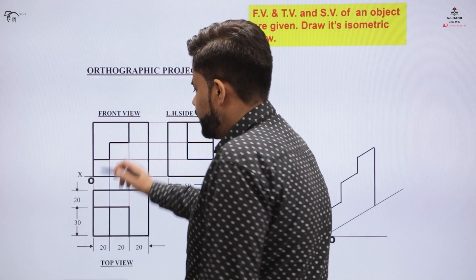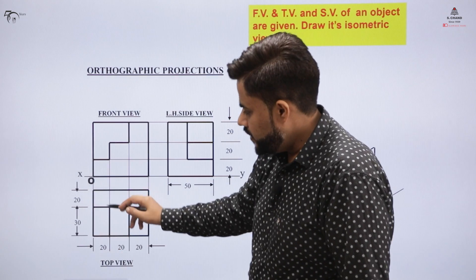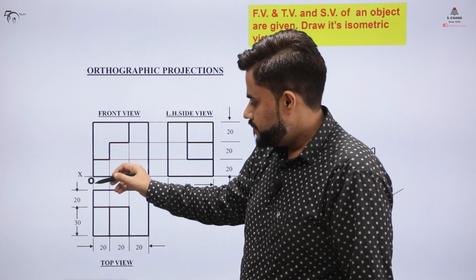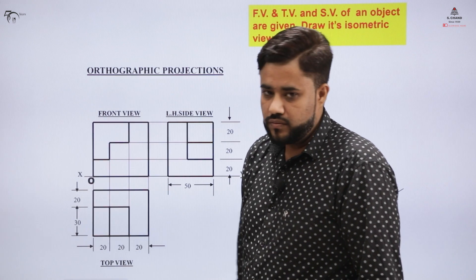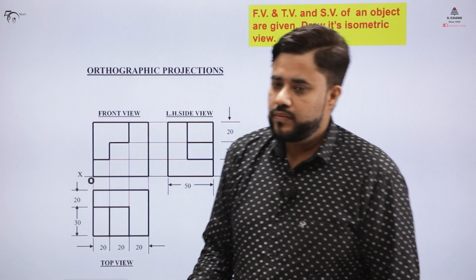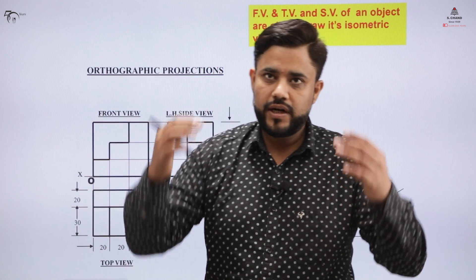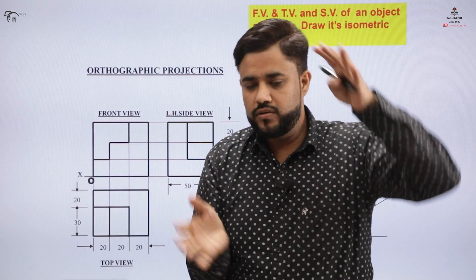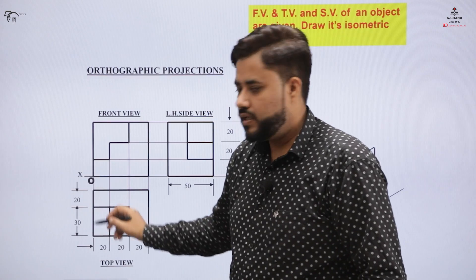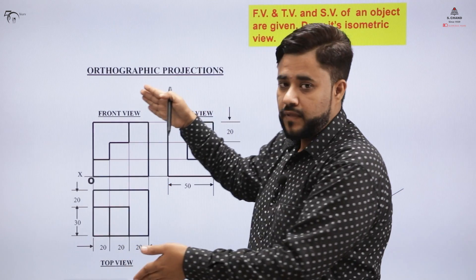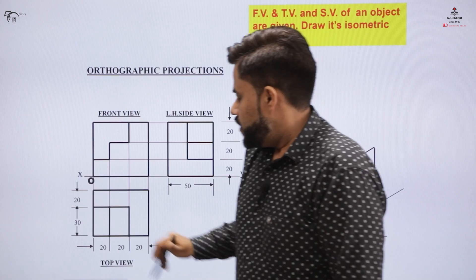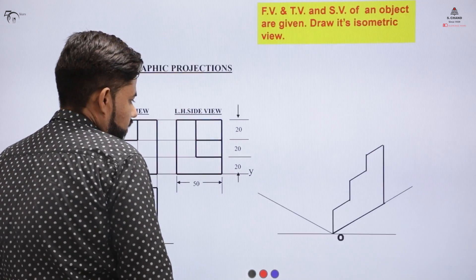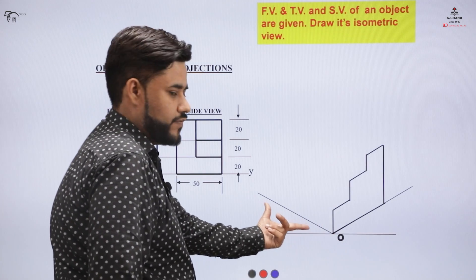Next we move to the top view. In the top view, there is a 50mm length shown by a dropping-down scenario. In orthographic projection, when you look at the object from the top you get the top view, and then the horizontal plane is rotated — that's why it appears in vertical fashion, otherwise it would be horizontal. So you create a length of 50mm here.